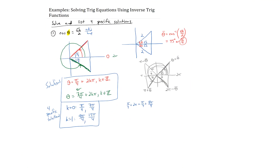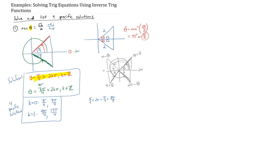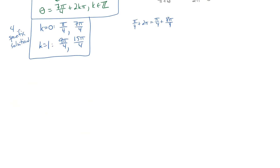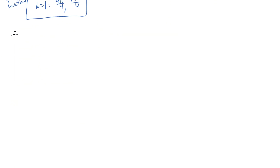Remember, any of these infinite angles plugged in for theta into the original equation should give a true statement — that's the idea behind solving these equations. Calculus students often struggle with this concept, so it's good to pick up in trigonometry. Example two: solve sine of theta equals negative 0.4.